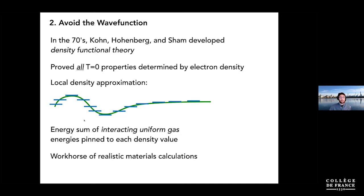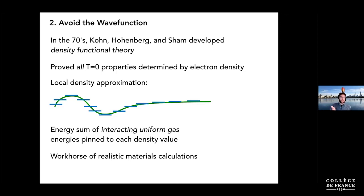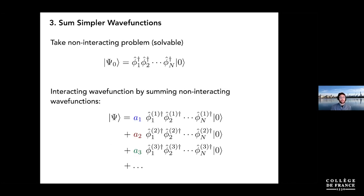Other things done for strongly correlated systems — essentially systems for which DFT doesn't work well — include working with certain important but simple classes of wave functions. For electrons, you have Slater determinants, which are product wave functions where every electron does its own thing in its own orbital. These are easy to work with on the computer, and more general interacting wave functions can be written as a sum of these. Sophisticated numerical schemes work out the coefficients and the right orbitals, and this can work very well in chemistry applications.